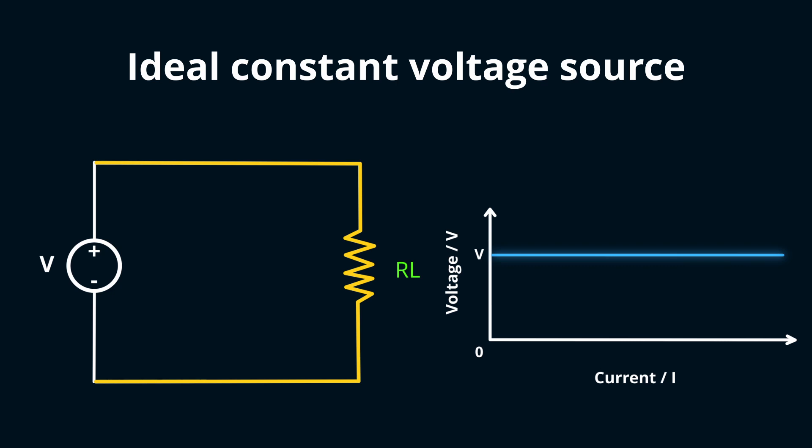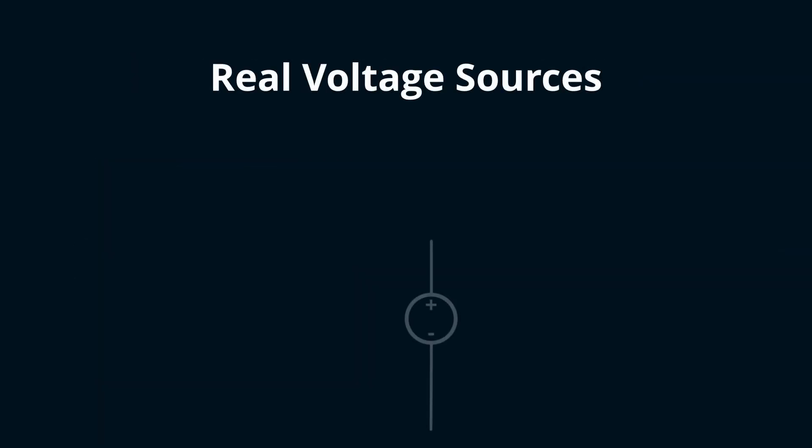But the real world isn't always ideal. Real voltage sources deviate from this perfect behavior, primarily due to a tiny internal resistance introduced in series with the source. Here's how it's conventionally represented.